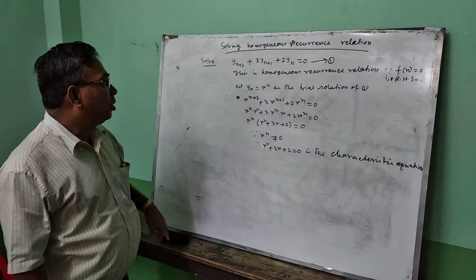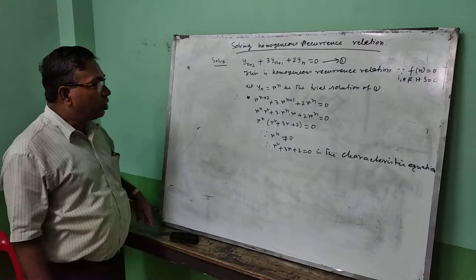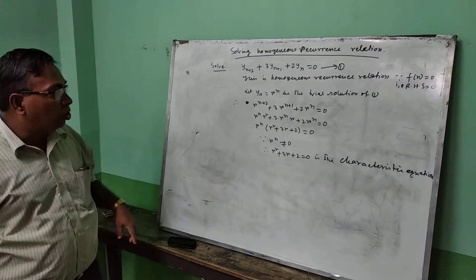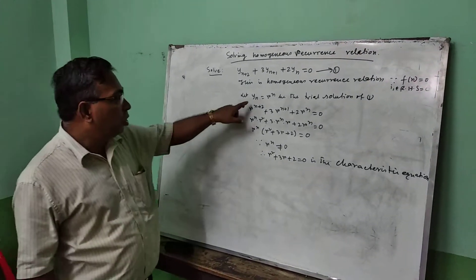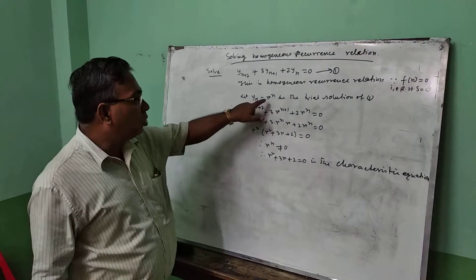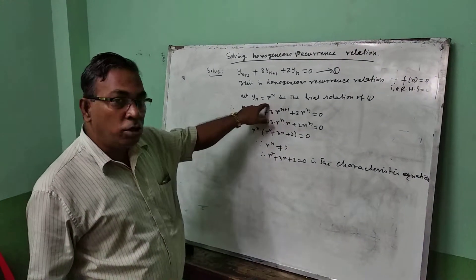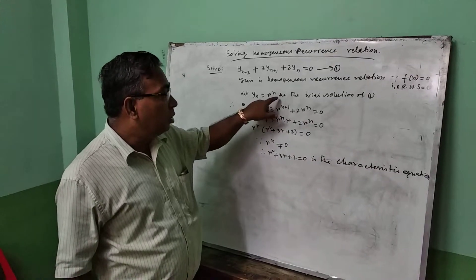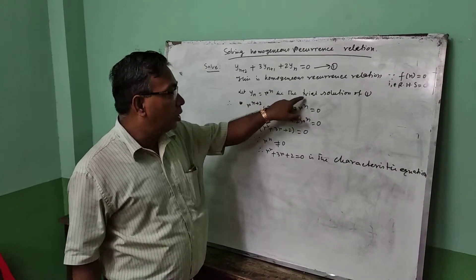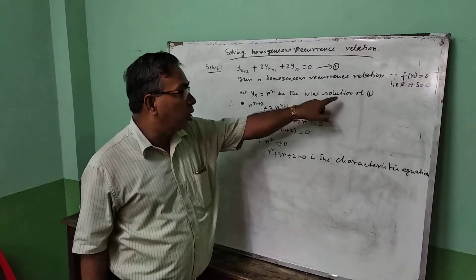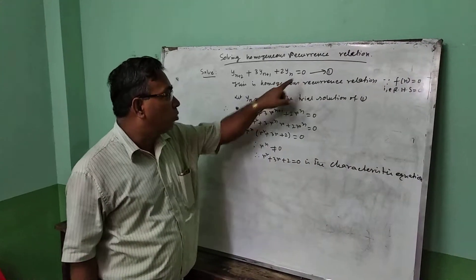So how to solve this? We have to take a trial solution, that is y(n) = r^n. This is the trial solution of equation 1.